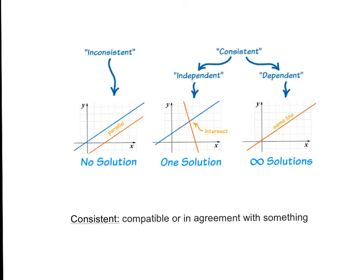These vocabulary words are easiest to recognize with graphs. When you have parallel lines, in other words, two lines with the same slope and different y-intercepts, we know that we have no solutions because the lines never cross. This is inconsistent.